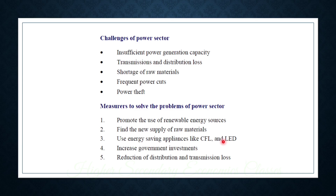Problems in the energy sector include insufficient power generation capacity, transmission and distribution loss, shortage of raw materials, frequent power cuts, and power theft. Solutions include promoting renewable energy resources, solar energy, finding new supplies of raw materials, using energy-saving appliances like CFL and LED, increasing government investment, and reducing distribution and transmission loss.